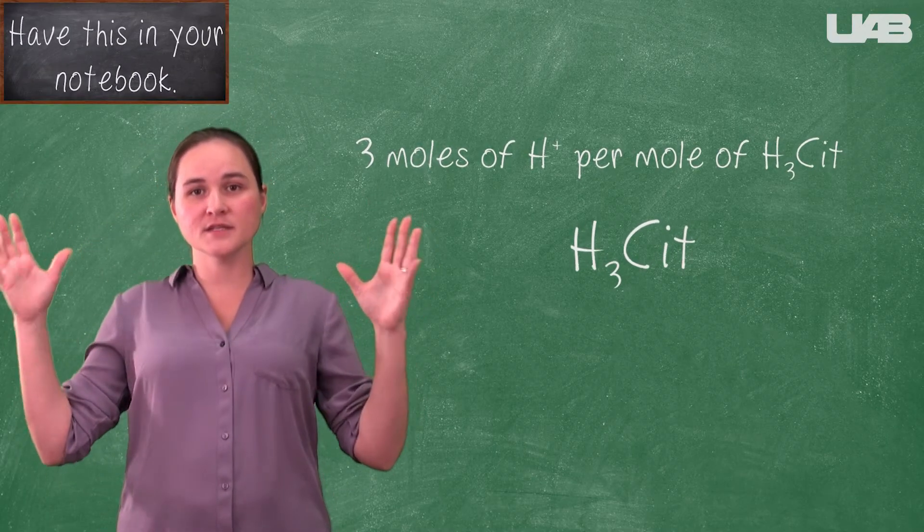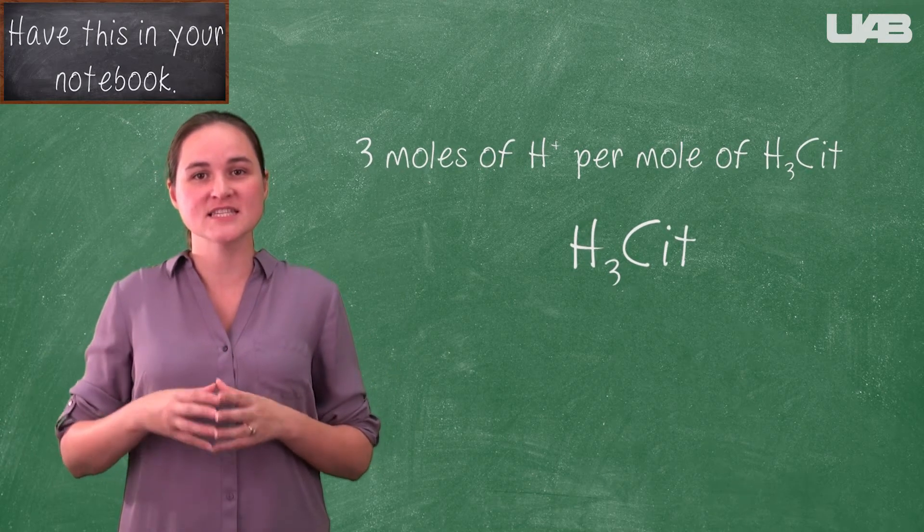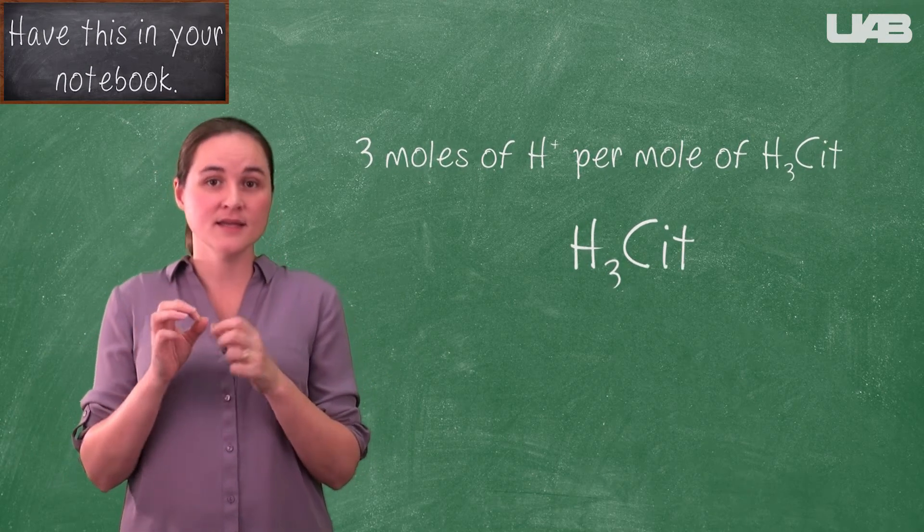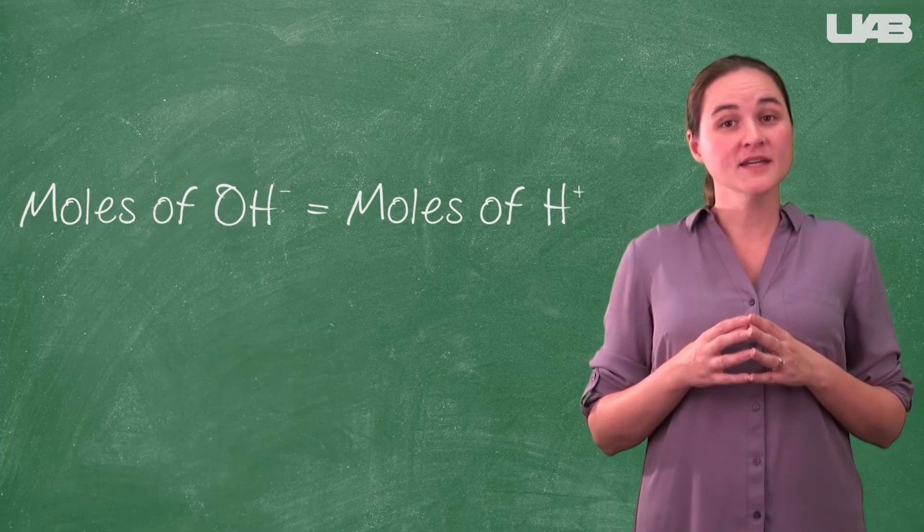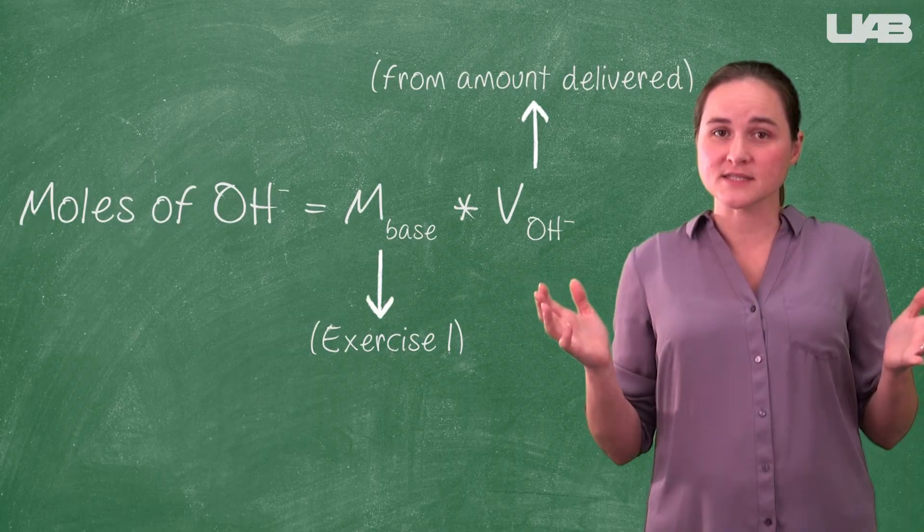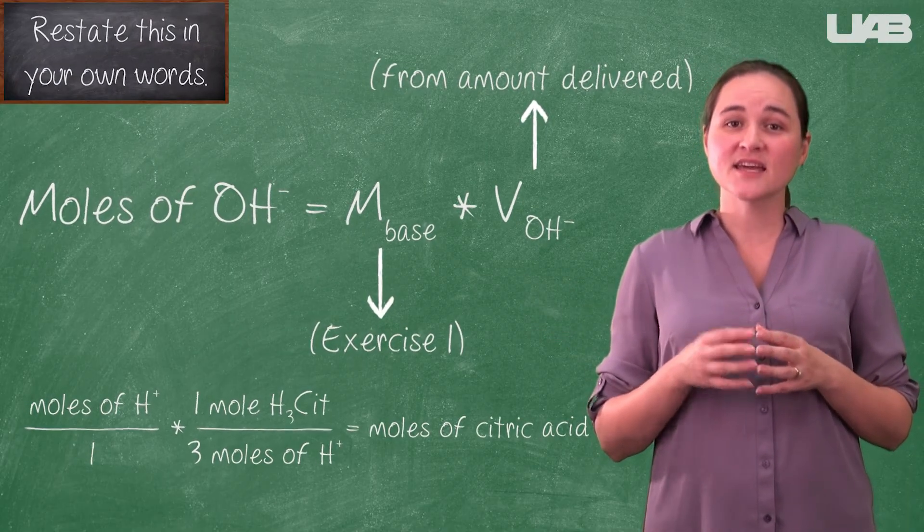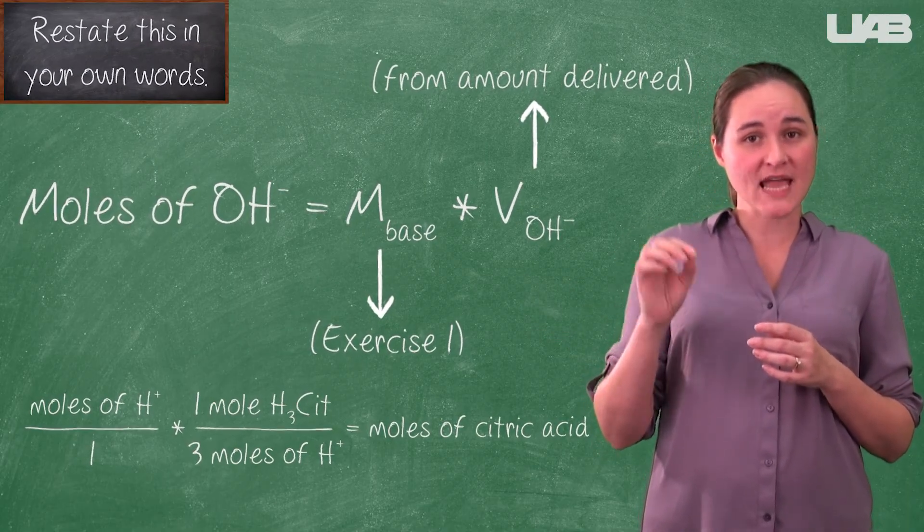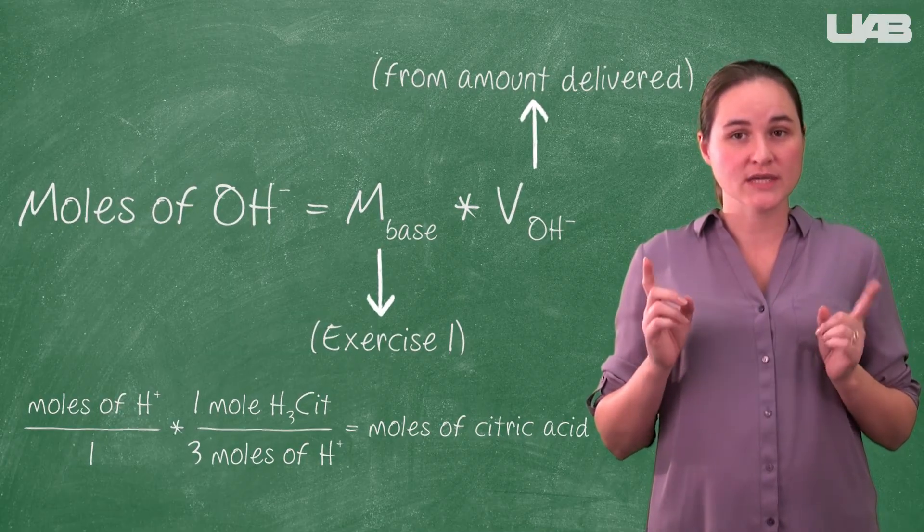The big difference here is that the citric acid is not a monoprotic acid. It is a triprotic acid. The indicator tells you when the amount of H+ is equal to the amount of OH-. Thus, the indicator indirectly tells you the amount of citric acid. You have to take the stoichiometry into account.